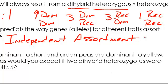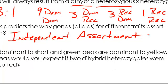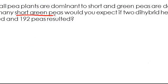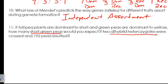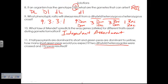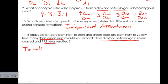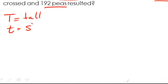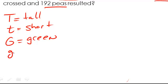And our final problem here, number eleven. If tall pea plants are dominant to short and green are dominant to yellow, how many short green peas would you expect if two dihybrid heterozygotes were crossed and 192 peas resulted?